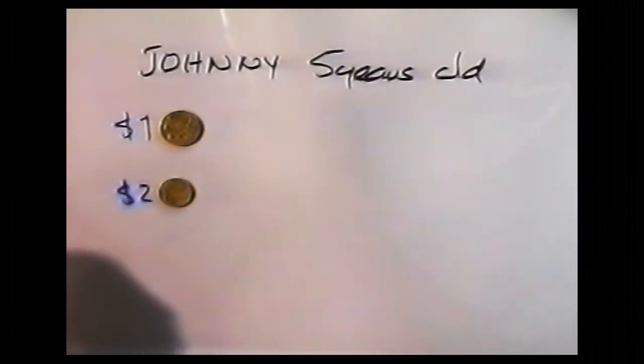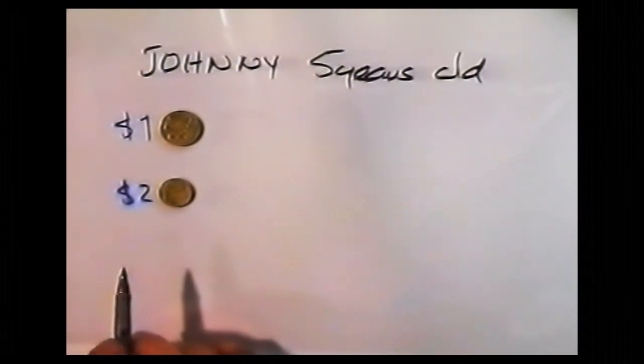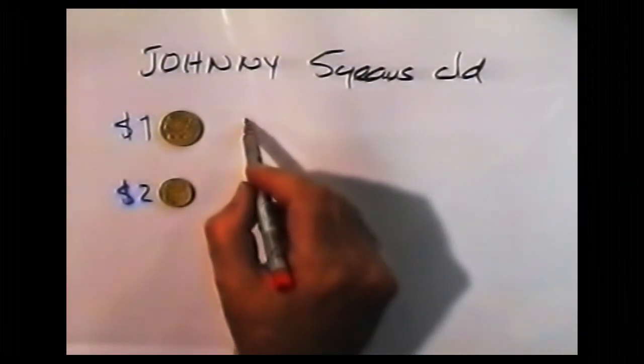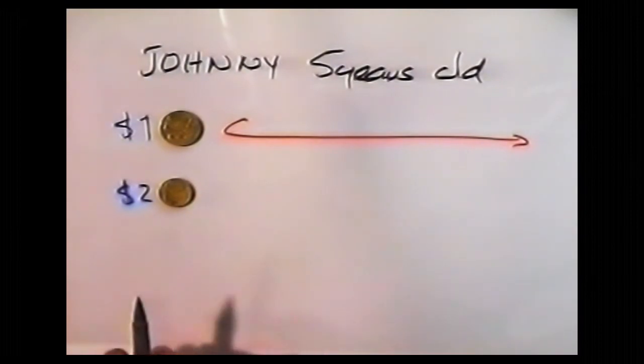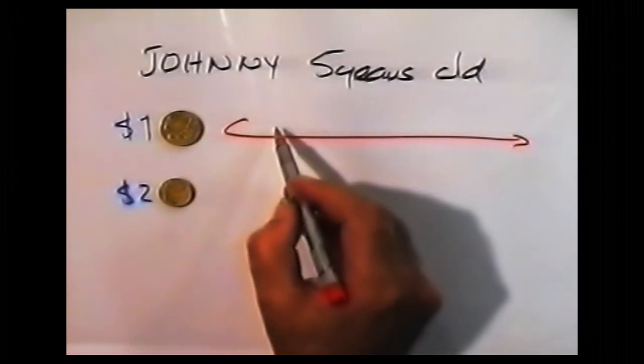Johnny, being very young, reckons the bigger one must surely be better, and so he takes the bigger one. His friends laugh and giggle and say to Johnny, stupid, he doesn't realize the smaller one is worth twice as much as the bigger one. So whenever they want to tease him, they offer him the coins. Always takes the bigger one, never seems to learn.